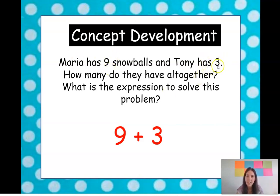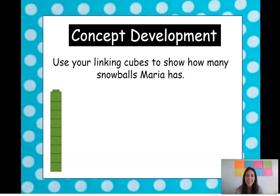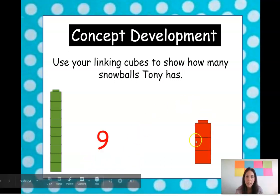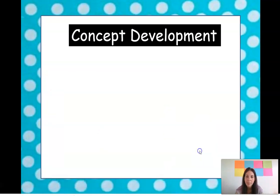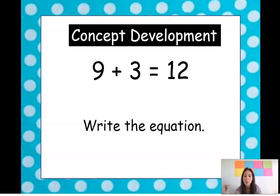We have nine and we have three. Because they're saying how many do they have all together, you take nine, you take three, and you put them all together — that means you're adding. So nine plus three. We can use linking cubes to show how many Maria has: one, two, three, four, five, six, seven, eight, nine. And we have nine plus three equals 12.